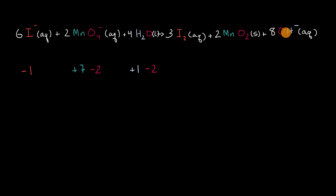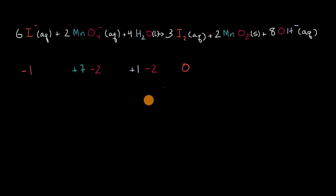Now let's look at the right-hand side of this reaction. What's going on with these iodines here? In this iodine molecule, they aren't gaining or losing electrons, so the oxidation number is zero.